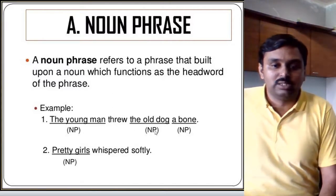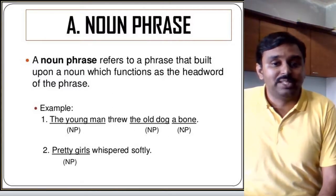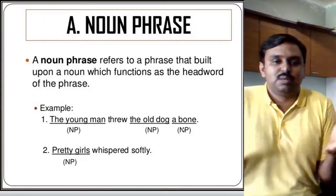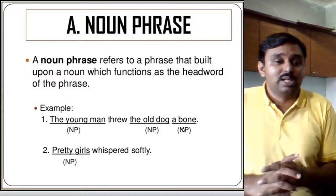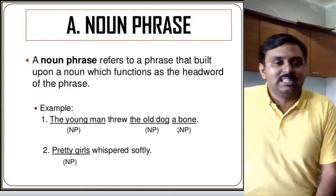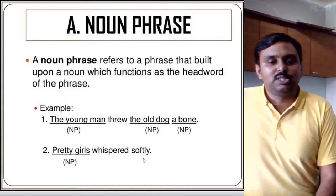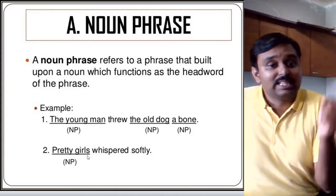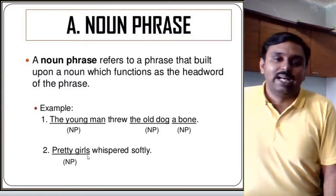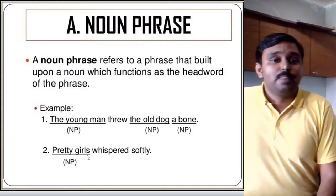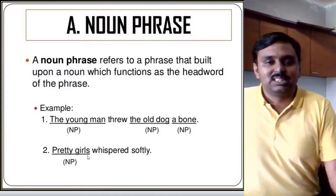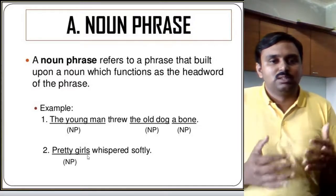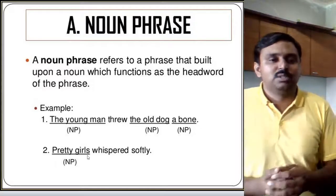'The old dog' is also an example of a noun phrase, and 'a bone' as well is a noun phrase. So if you find some nouns coming together, they form a noun phrase. Look at the second example: 'Pretty girls whisper softly.' Here 'pretty girls' — both words — are an example of a noun phrase, working as a noun only. This is the way we identify most of the phrases.